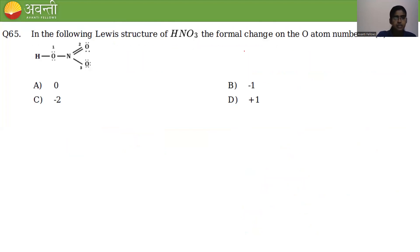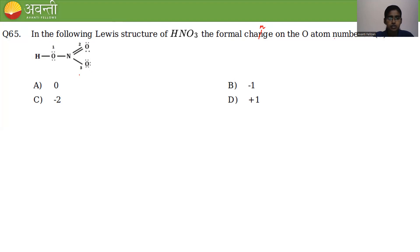Coming to question 65: in the Lewis structure of HNO₃, find the formal charge on oxygen atom number 3. The formula is: Formal charge = (total valence electrons) − (non-bonded electrons) − (bonded electrons/2).